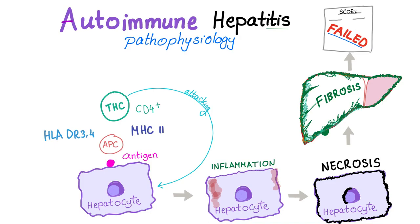The antigen is presented specifically to the T helper CD4-positive leukocytes, which then start attacking the hepatocytes through different mechanisms. This process involves human leukocyte antigen HLA-DR3 and DR4. Note that HLA-A, B, and C are MHC class 1, however HLA-D is MHC class 2.